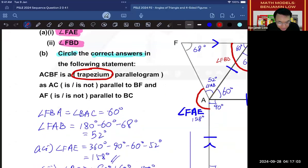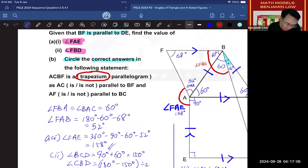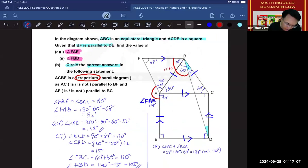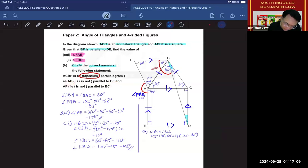Next. We know that it is a trapezium because AC and BF. Again, let me show you. AC and BF, they are parallel. So, it is parallel.